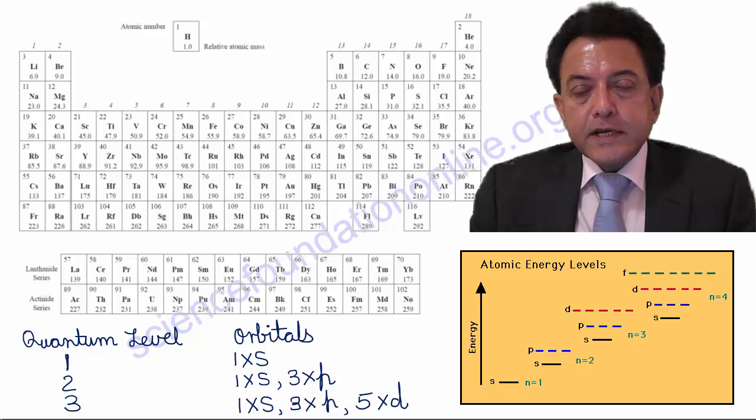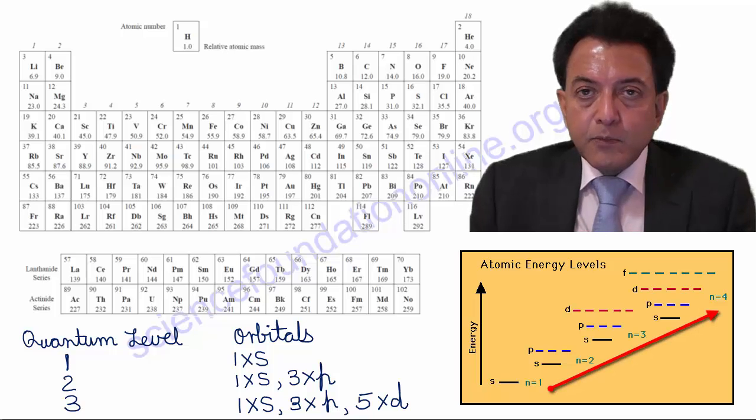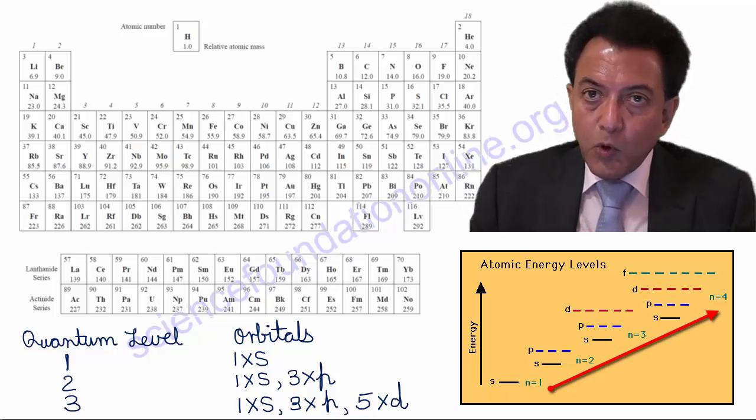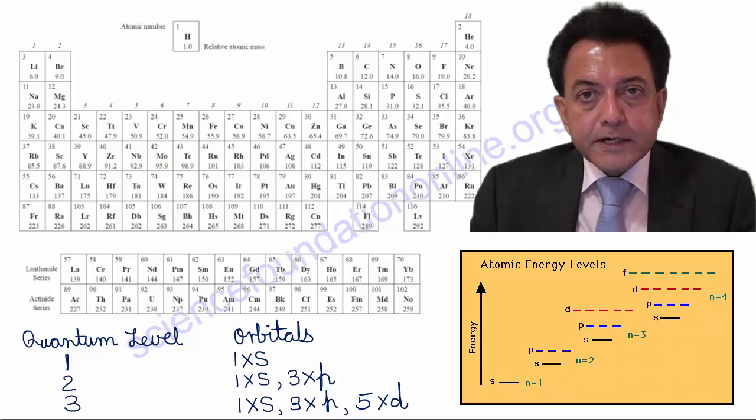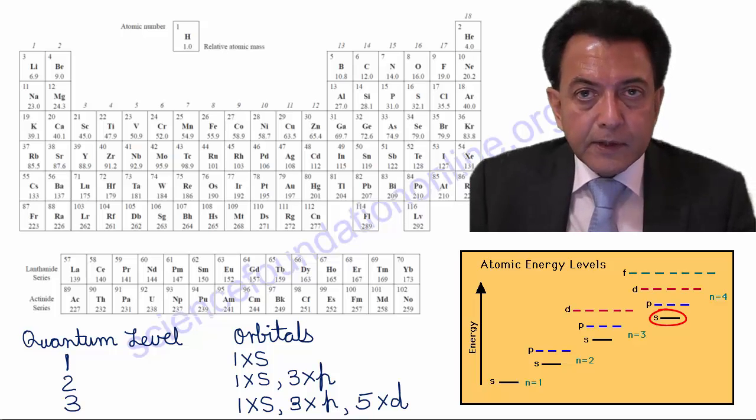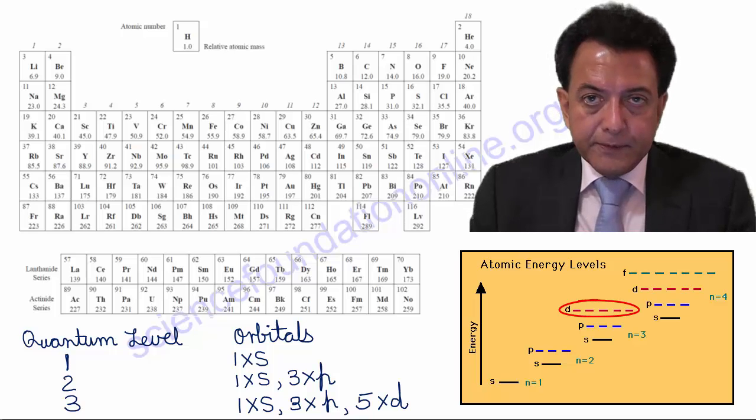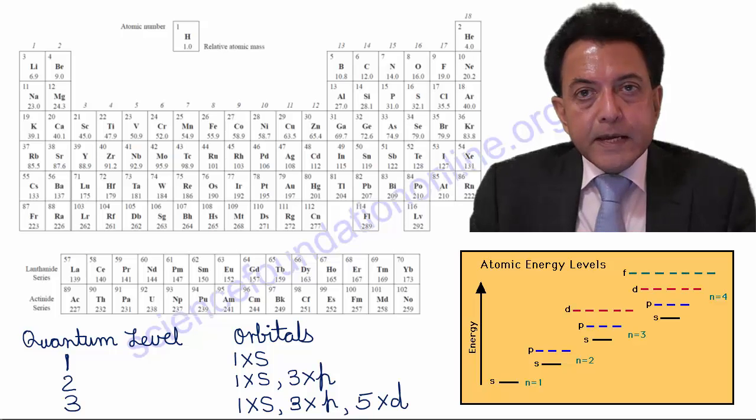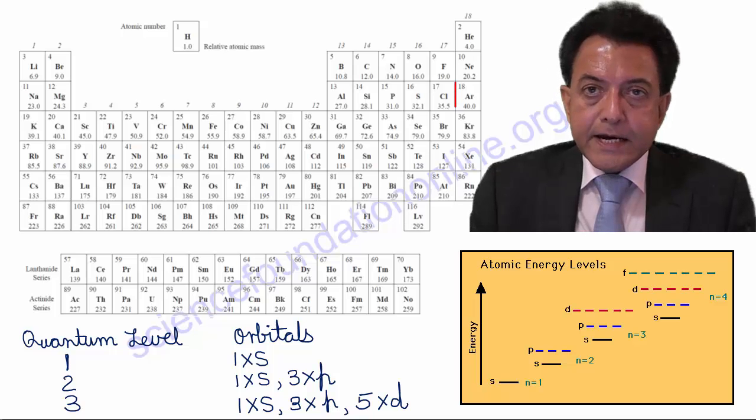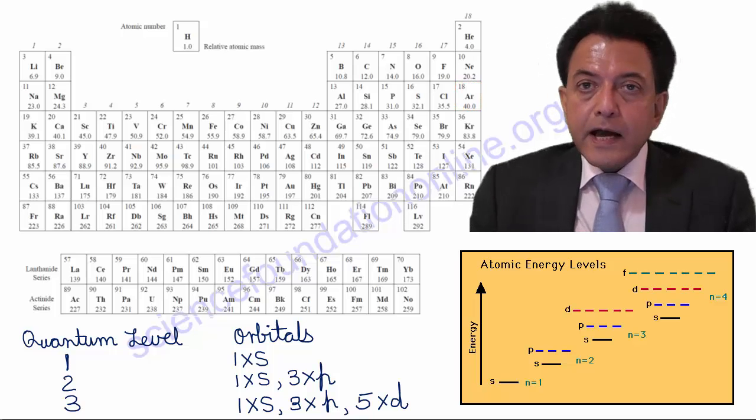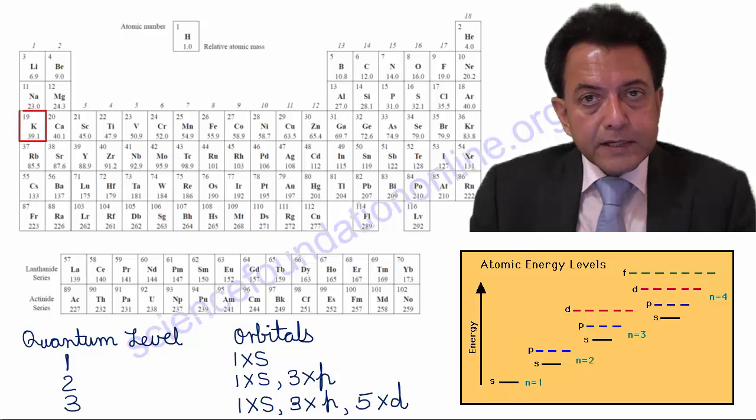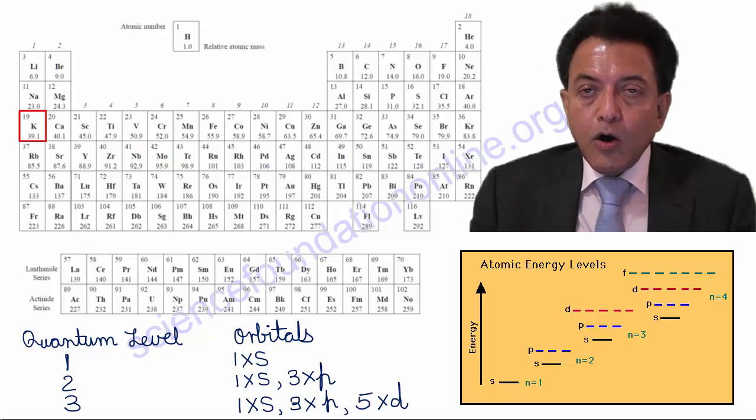While the increase in energy of the orbitals is mostly in the order of their principal quantum or shell number, note the deviation from this when the S orbital of the fourth quantum level has a lower energy than the D orbitals of the third quantum level. This is why, once the P orbitals of the third quantum level have been filled with the 18 electrons of Argon, the 19th electron in the next element, potassium, actually goes into the 4s orbital instead of a 3d orbital.